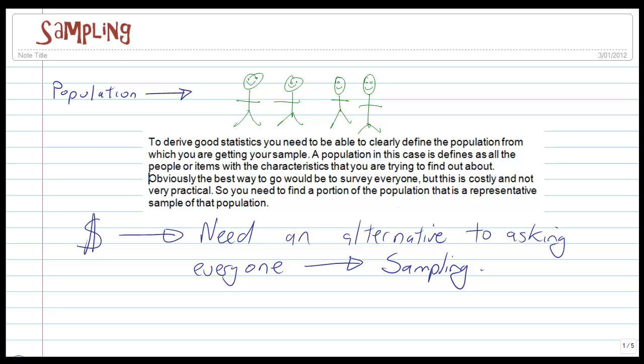Obviously the best way to go would be to survey absolutely everyone but you can't do that because it's very cost inefficient, it takes a long time and there are hassles with that as well. So you need an alternative rather than asking everyone and this is called sampling.